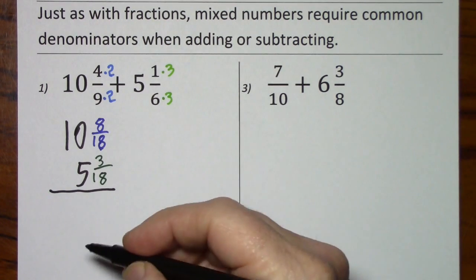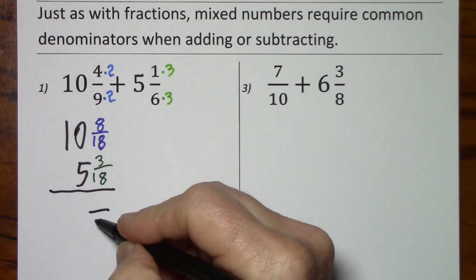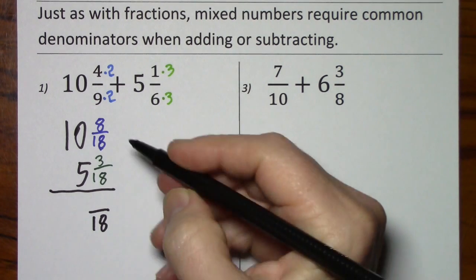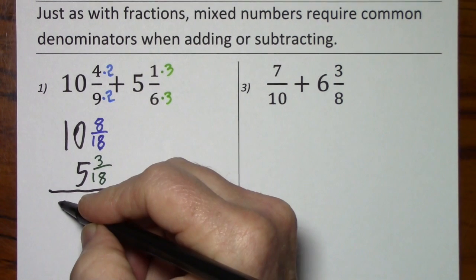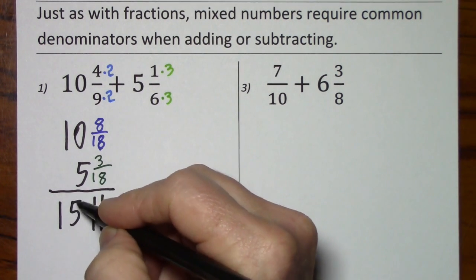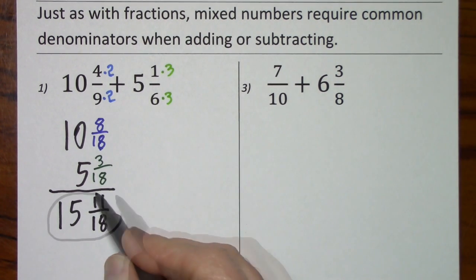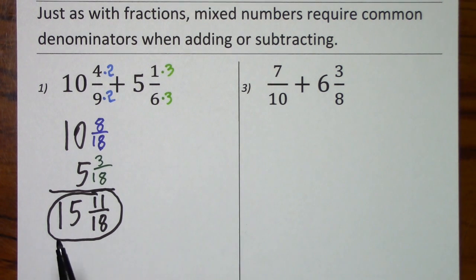Signs are the same, we're adding. We're certainly going to keep 18. 8 and 3 is 11. 10 and 5 is 15. So, here's our first answer: 15 and 11 eighteenths.